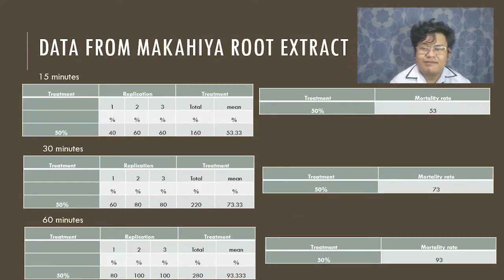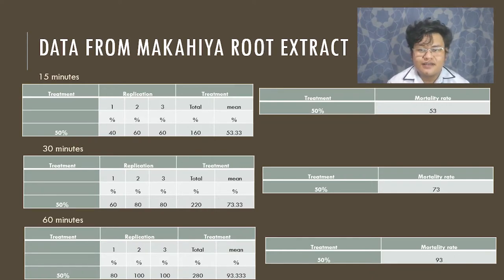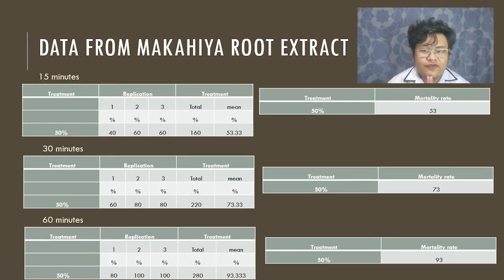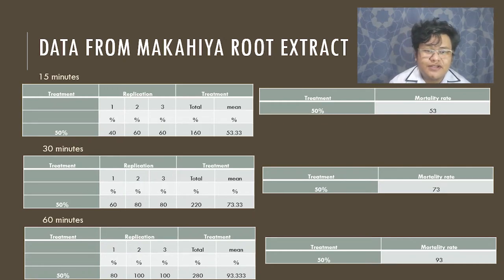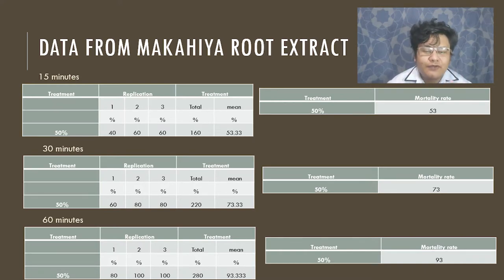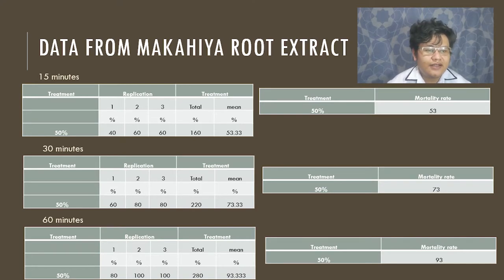I will discuss the data gathered from the Makahiya Mimosa Pudica Root Extract study. Please note that we will only focus on the 50% extract and 50% water treatment. Here in the slide, we can see six tables. At the 15-minute mark, the treatment with 50% water and 50% extract shows three replications: the first replication at 40%, the second at 60%, and the third at 60%. The total is 160%, with a mean of 53.33%, resulting in a mosquito wriggler mortality rate of 53.